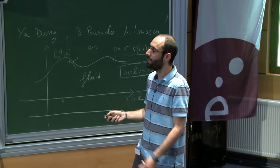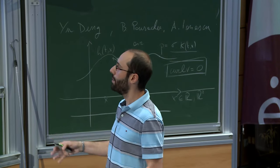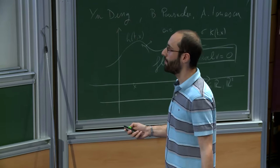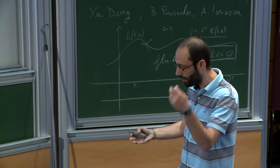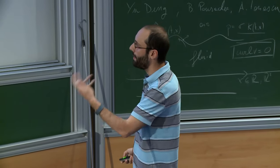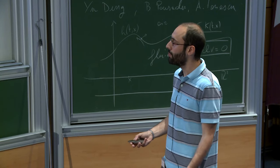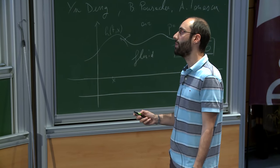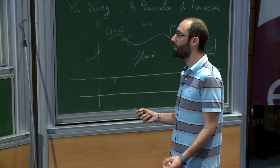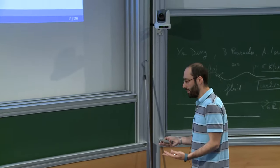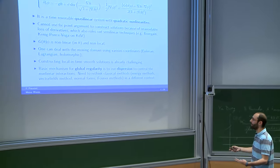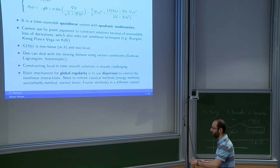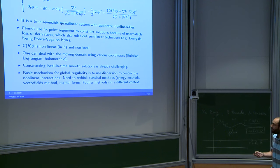Constructing local-in-time solutions is already challenging. If you want to go beyond the local existence time and construct global solutions, the basic mechanism will be to use dispersion to control the non-linear interactions. In a framework with a quasi-linear equation with quadratic non-linearities that decay very slowly, you need to rethink and combine the classical methods such as energy methods, the vector fields methods of Klainerman, normal forms, and all the Fourier methods used in semi-linear equations.